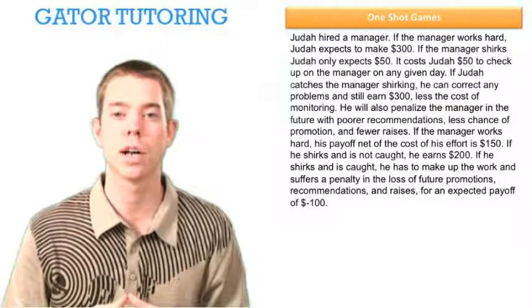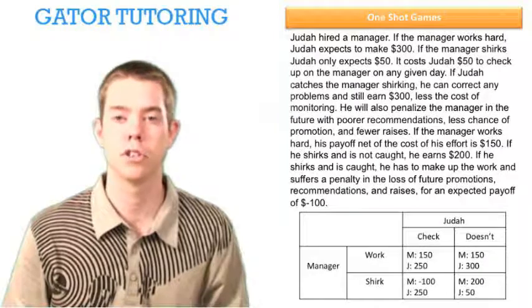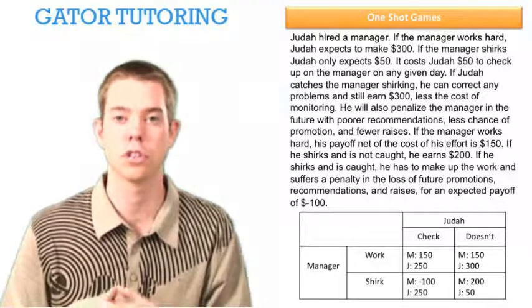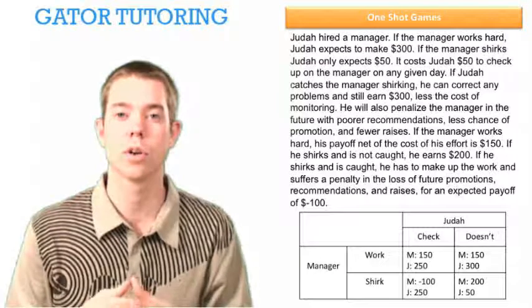The first thing we want to do is organize these payoffs into a payoff table. So we'll put Judah on top, and his choices again are check up or don't check or doesn't check, and we put the manager on the left, and his choices are to work or to shirk.